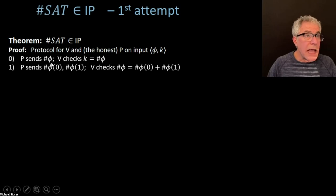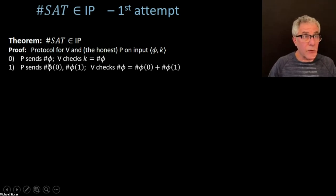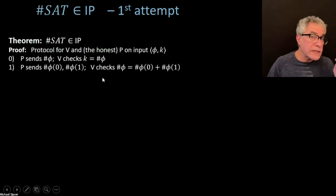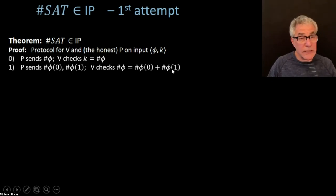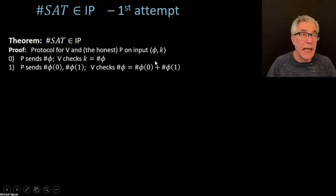Then the verifier says: okay, that was very good that you sent me this, but how do I know that's right? What the prover is going to do to try to convince the verifier that this value was correct is to unravel that by one level. Say, well, there were nine satisfying assignments altogether — six of them were when x1 is zero, and three of them were when x1 is one. The verifier has to check that these add up correctly: when I preset x1 to zero and to one, it had better add up to the total number of satisfying assignments. If that works out, the verifier is happy and it's still consistent with being convinced that this k was the right value.